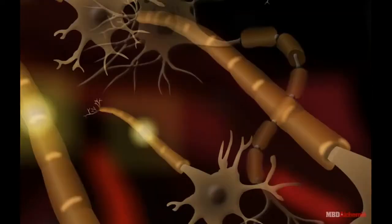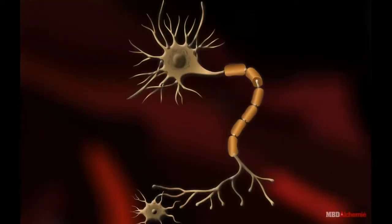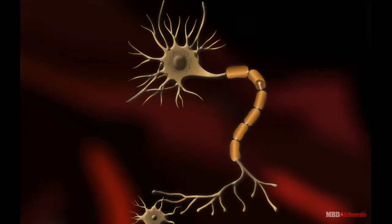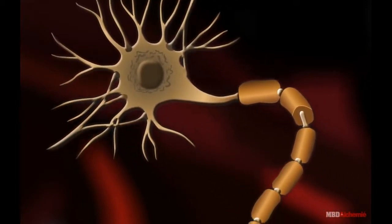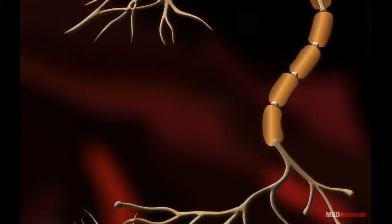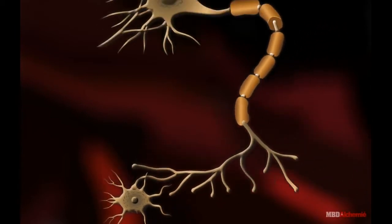Let's understand the structure of a neuron or nerve cell. A neuron is a nerve cell with branches. It is the structural and functional unit of the nervous system.